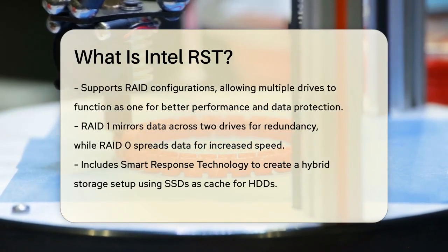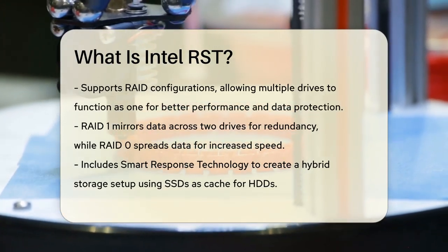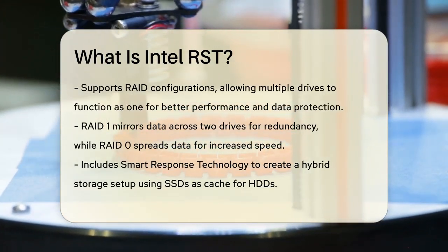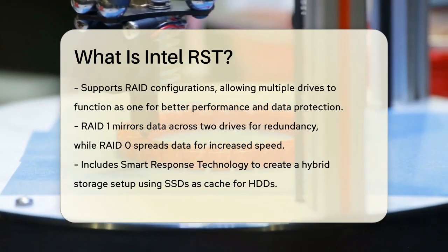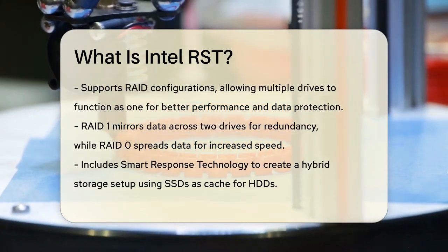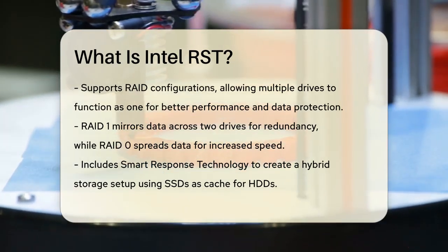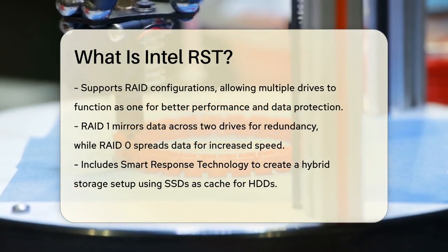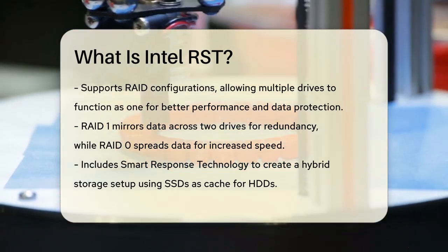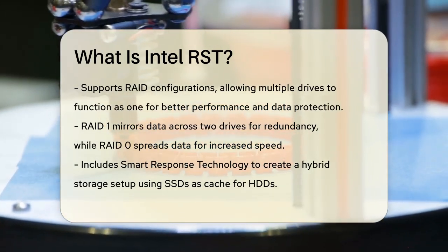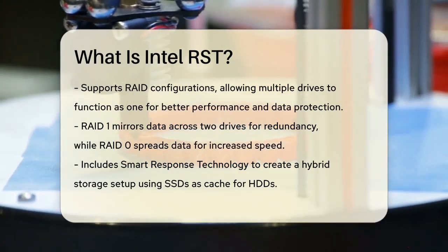One of the key features of Intel RST is its support for RAID, redundant array of independent disks configurations. This means you can set up multiple drives to work together as if they were one, which can significantly increase performance and provide better data protection. For example, RAID 1 mirrors your data across two drives, so if one drive fails, your data is still safe on the other. RAID 0, on the other hand, spreads data across multiple drives to increase speed, which is great for tasks like video editing.